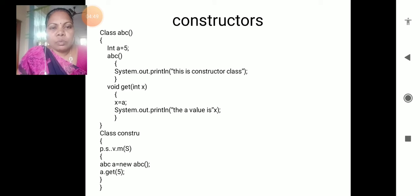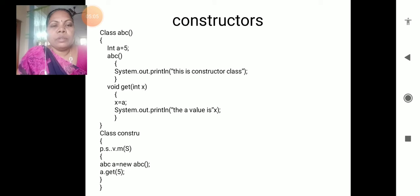int a is equals to 5 is a class variable declaration. Then followed by the method declaration ABC. When you are preparing the constructor, there is no need for a return type of the method name - no need to give any void, int, or float like that. Just simply, whatever the class name is, you use that as the method name.